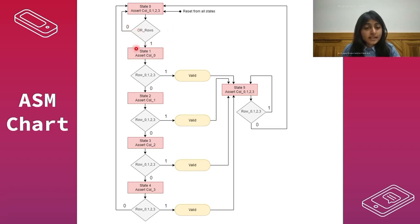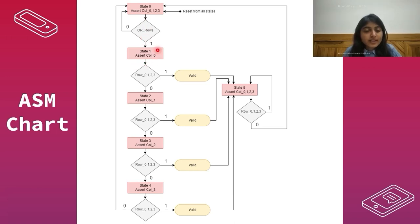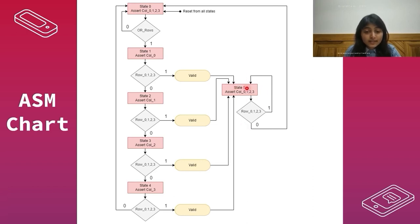To summarize: initially the machine is in state 0, waiting for a key to be pressed. As soon as a key press is detected, the machine exits state 0 and starts asserting column lines one by one. In state 1, it asserts column line 0, and if the pressed key is not in that column, it checks the next column. If the pressed key is not found in any column, the machine enters the reset state. But if the pressed key is found, the valid signal is made high. State 5 is then entered, in which all column lines are asserted and the machine stays there as long as the key is pressed. As soon as the key is de-asserted, the machine enters the reset state again.